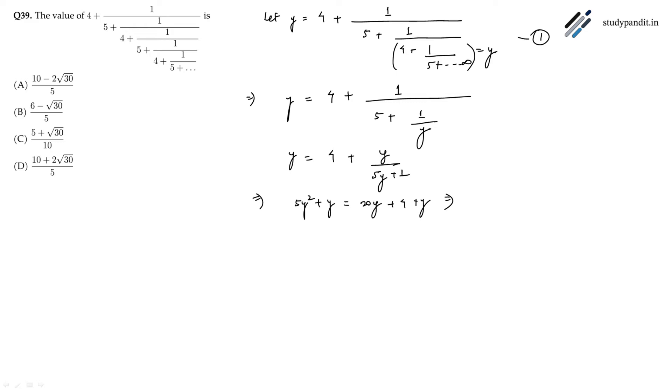Which turns out to be 5y squared minus 20y minus 4 equals 0. Solving this quadratic equation...